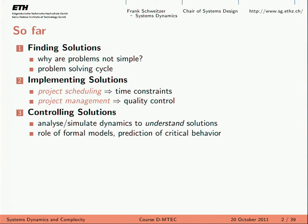A quick recap of what we did so far. Finding solutions — that's what we looked at in the beginning, including defining your problem, defining your objectives, and then we looked at the problem-solving cycle. After this, implementing solutions — project management mostly, critical path method, quality control, stuff like that.